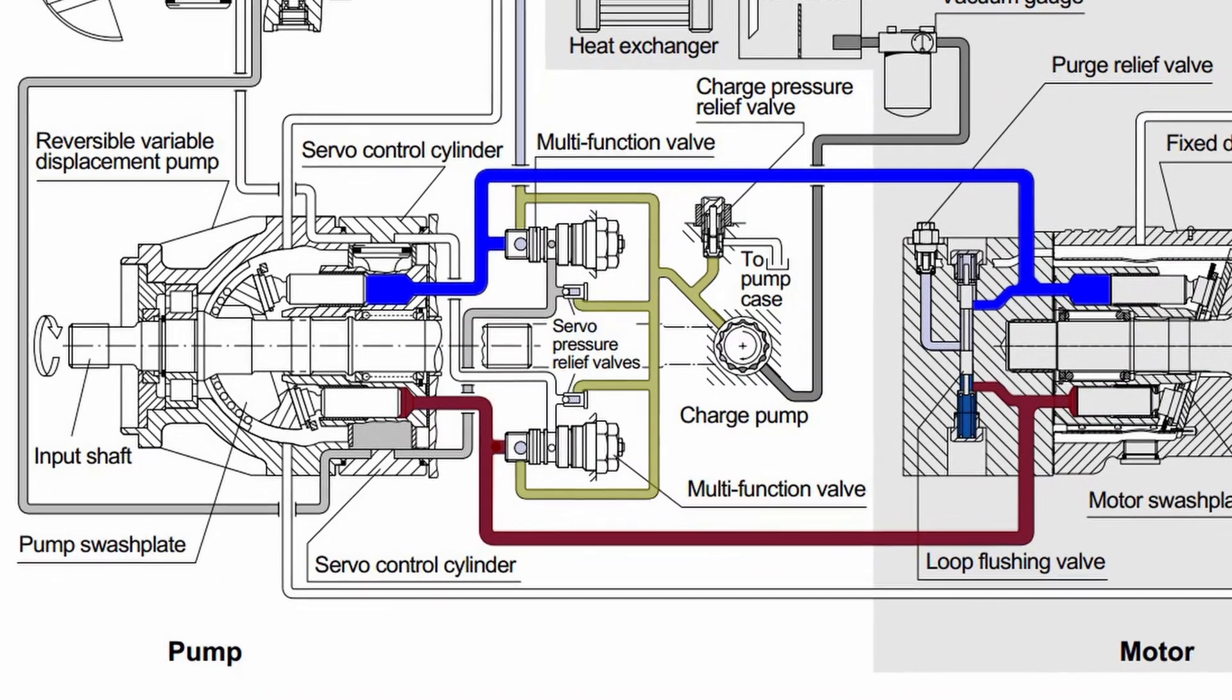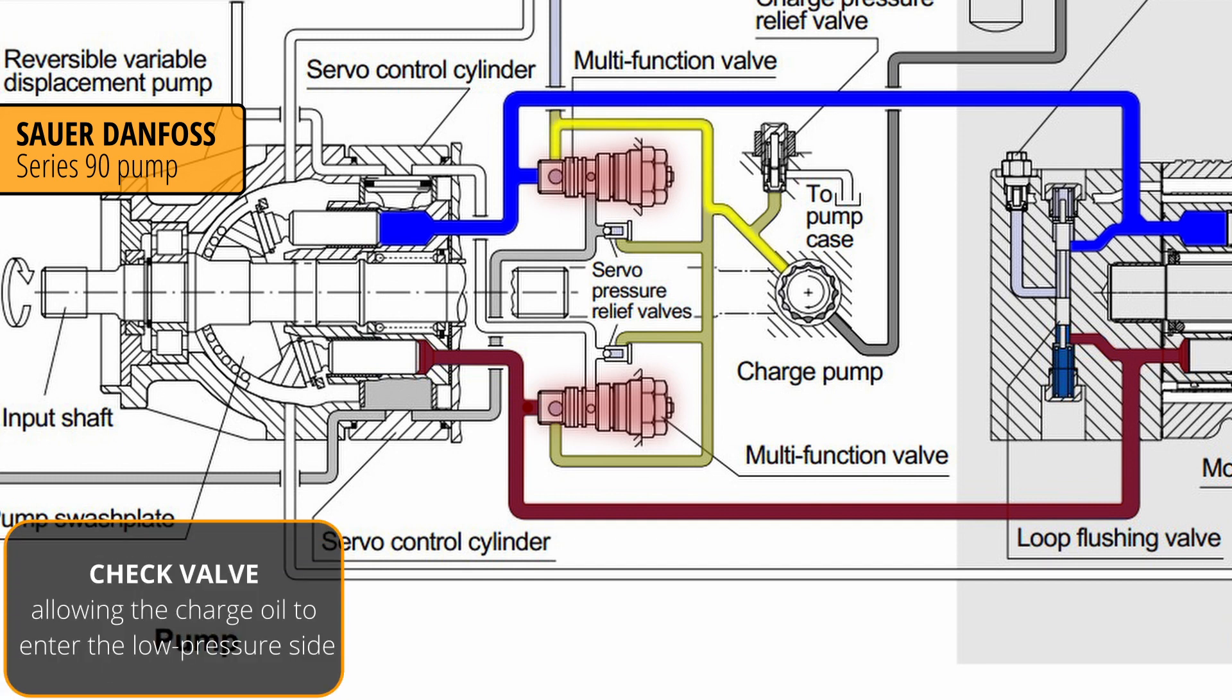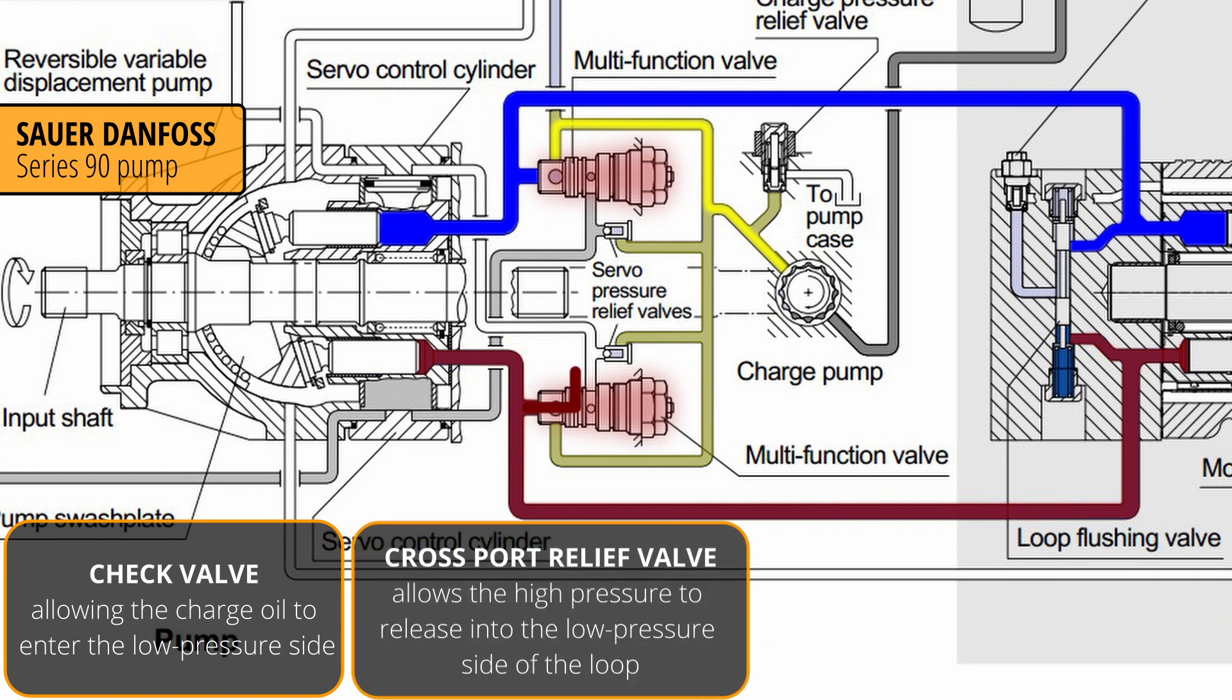In our pump we have a multi-function valve, which performs both functions we mentioned in our lesson about closed loop systems. It is both a check valve, allowing the charge oil to enter the low pressure side, and a cross-port relief valve, which allows the high pressure to release into the low pressure side of the loop when pressure gets too high.